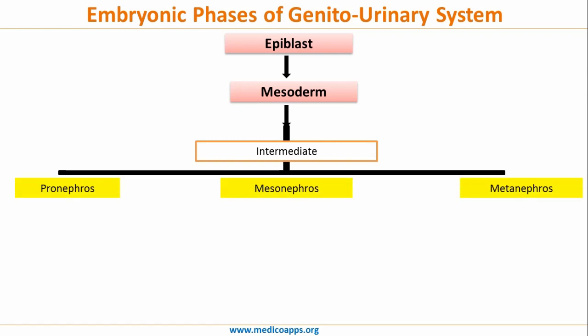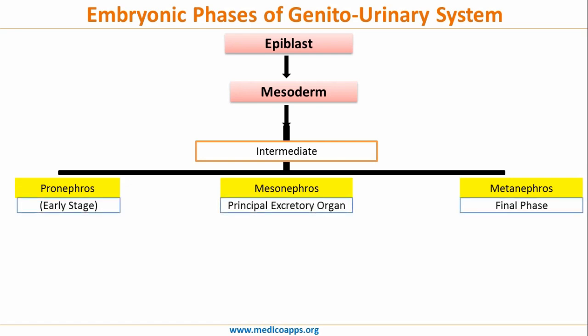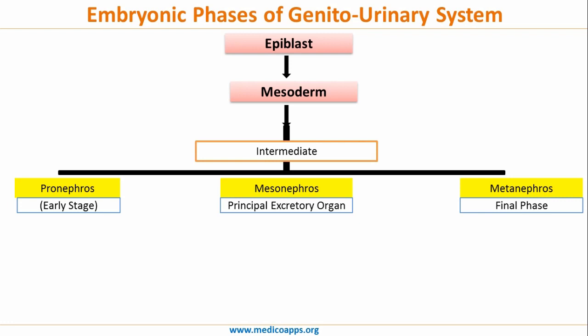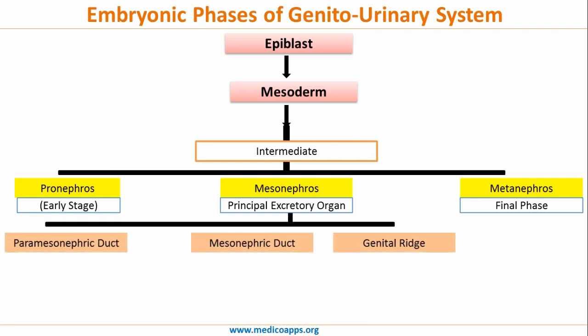It is from the intermediate derivative of mesoderm that we have the pronephros, the mesonephros, and the metanephros. The pronephros is the early stage, while the metanephros is the final phase — also called the blastema — and forms the proximal convoluted tubule, the distal convoluted tubule, the loop of Henle, and the glomerulus. It is from the mesonephros that the major portion of the genitourinary system is formed. The mesonephros gives rise to the paramesonephric duct, the mesonephric duct, and the genital ridge. The genital ridge gives rise to the ovary and the testis.